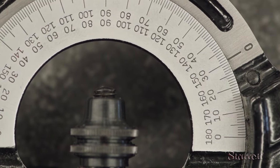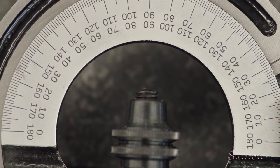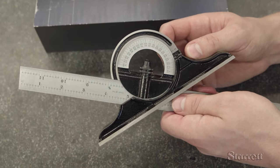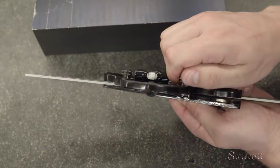The protractor head lets you check or set an angle to the closest degree. Its finely lined protractor has zero to 180 degree scales in both directions. Once set, the angle can be securely locked.